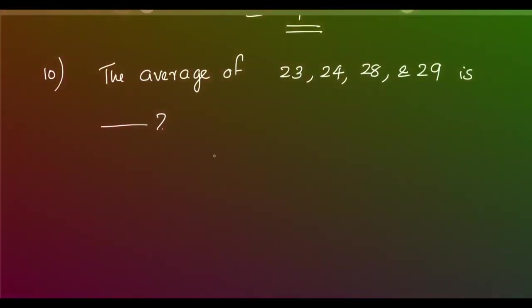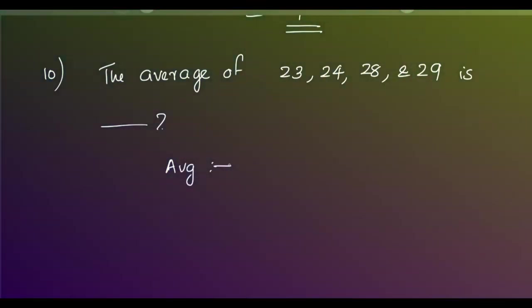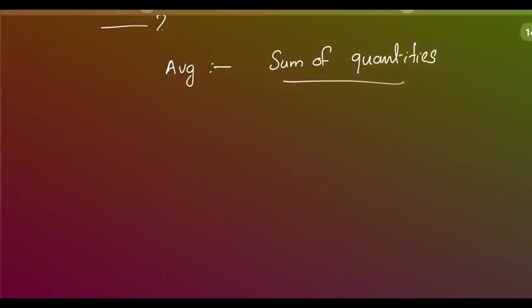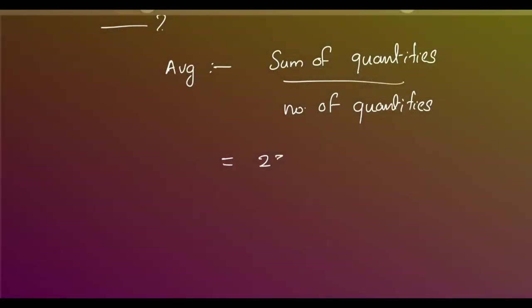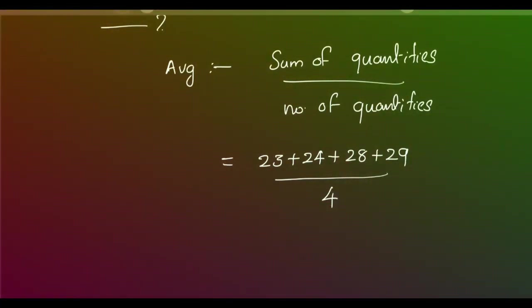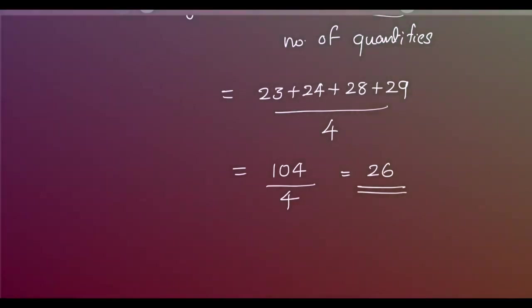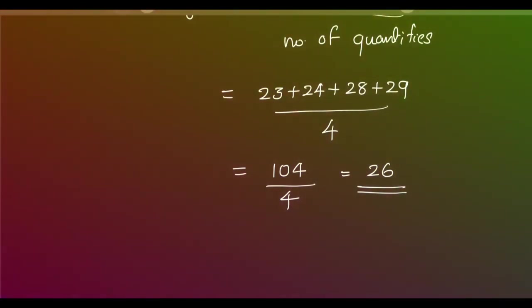The tenth question involves finding the average. Average equals the sum of all quantities divided by the number of quantities. It is equal to (23 + 24 + 28 + 29) divided by 4. Adding these gives 104 divided by 4, which equals 26. This is the end of our first worksheet. If you are interested in this video, please share and subscribe.